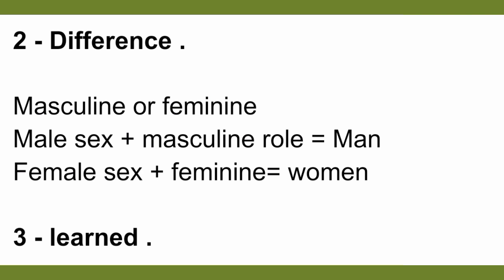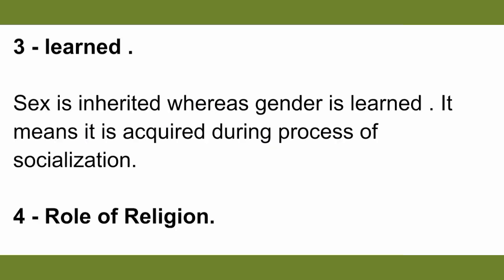The second characteristic is difference — the difference between masculine and feminine. Male sex plus masculine role equals men, and female sex plus feminine role equals women. The third characteristic is that gender is learned. Sex is a natural or biological process, but gender is not biological or natural — it has been given by society.